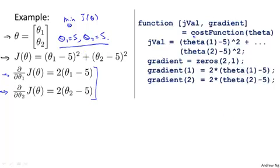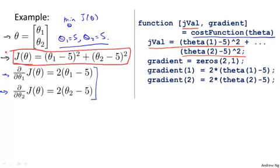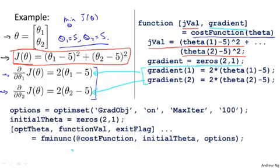We implement a cost function theta function. What this does is it returns two arguments. The first, jval, is how we compute the cost function J — so jval equals (theta 1 minus 5) squared plus (theta 2 minus 5) squared, computing this cost function. The second argument this function returns is gradient, which is going to be a two-by-one vector. The two elements of the gradient vector correspond to the two partial derivative terms.